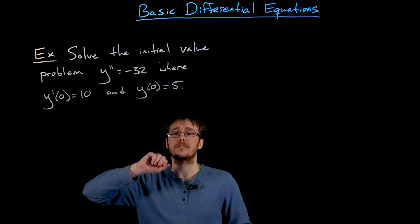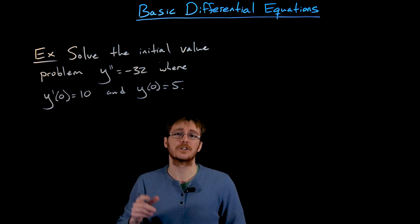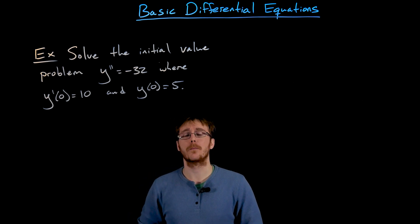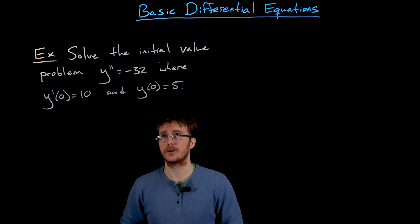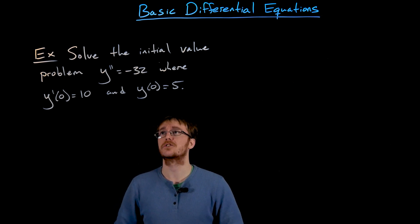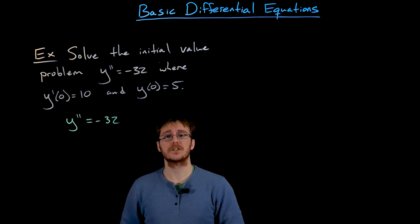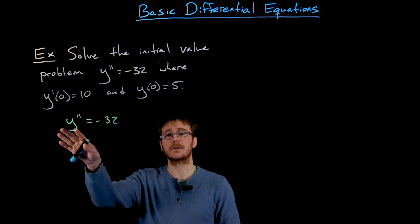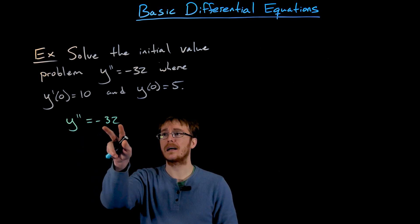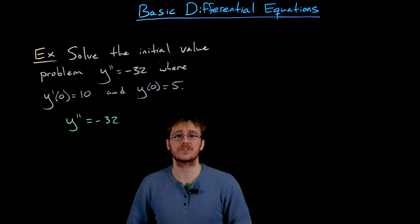The first derivative describes the initial velocity of the object, and the original function's initial condition would describe the initial position of the object. If that were the context, we'd be finding the original position function describing the movement of this object. For a differential equation like this where we have y double prime equal to some function of just x, we can integrate both sides to solve our differential equation.